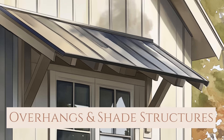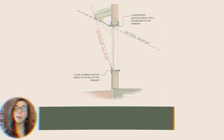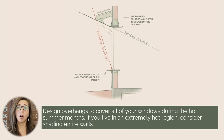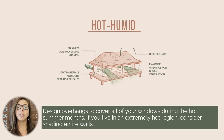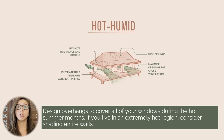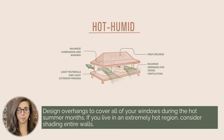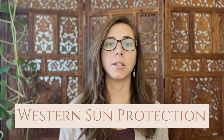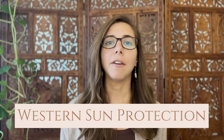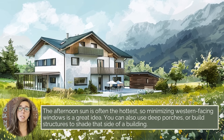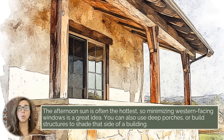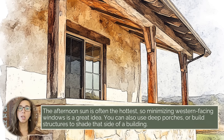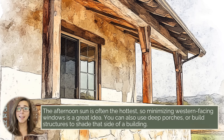One is overhangs and shade structures: design overhangs to cover all your windows during the hot summer months, and if you live in an extremely hot region, consider shading all the walls. Two is western sun protection: the afternoon sun is often the hottest, so minimizing western-facing windows is a great idea. You can also use deep porches or build structures to shade that side of the building.